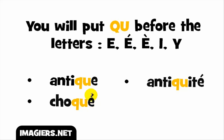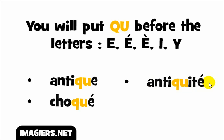Another example: E accent aigu — remember, as I said, it was the sound /e/ — so you get the sound /k/. The full word goes like 'choqué'. And last example with this E sound: the full word goes like 'antiquité'. So let's see them one more time: 'antique', 'choqué', 'antiquité'.